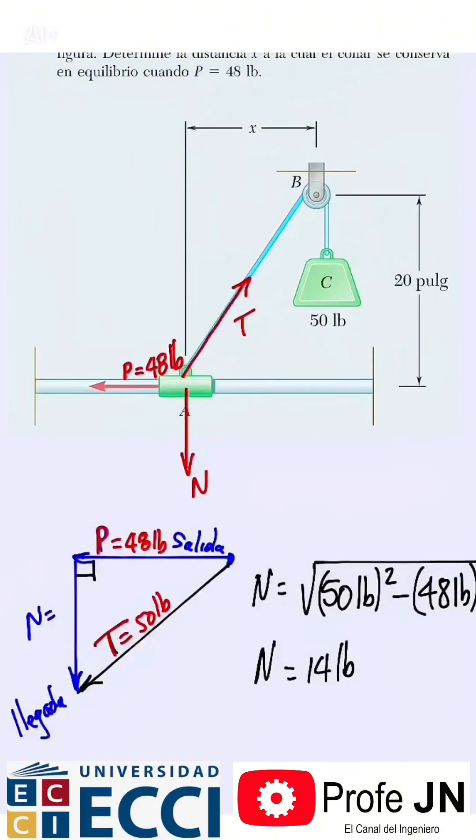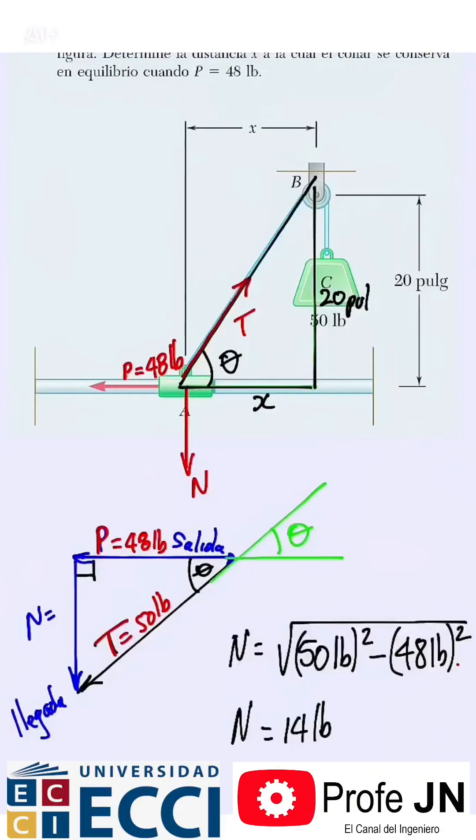Look at the following triangle. It is a right triangle—the triangle of lengths. This height is 20 inches, we need to find this distance, and this angle is theta. But theta is the angle between the tension and the horizontal. Well, it turns out that we can calculate it here. We are going to calculate this theta, which is the same theta.